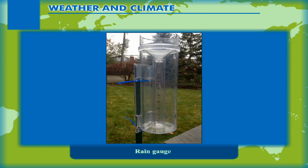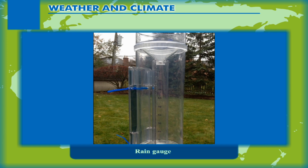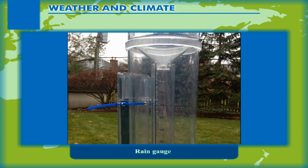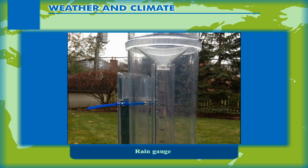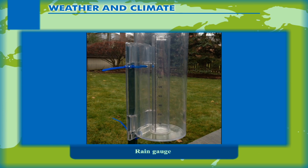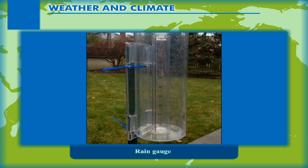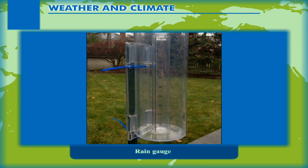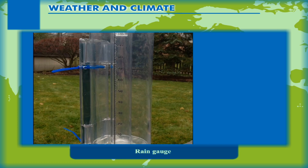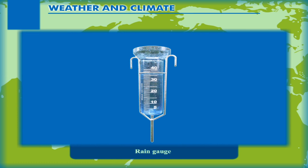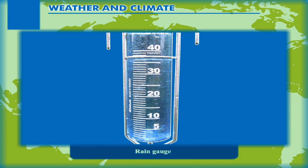The rain gauge consists of a cylinder with a fixed funnel to collect the rainwater. The water is collected in a jar which is placed below the funnel. The amount of water collected within 24 hours is measured using a graduated cylinder. Rainfall is usually measured in centimetres or inches.